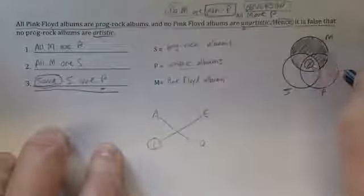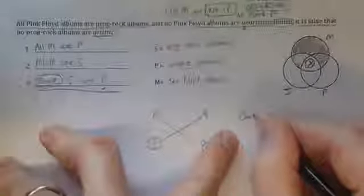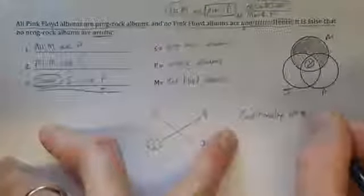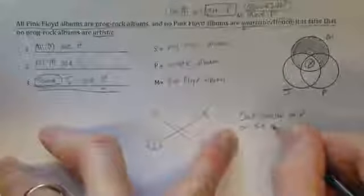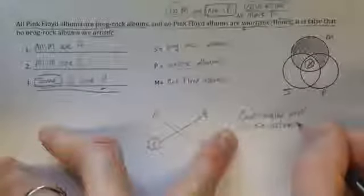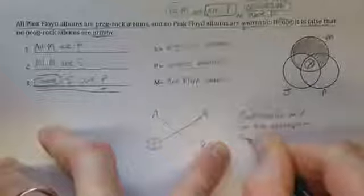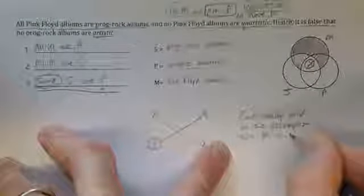However, if I assume that M is a real category and has one member, it would have to be in this area. The other areas of M are excluded from possibility. So this argument is conditionally valid on the assumption that M is a real category.